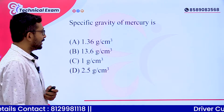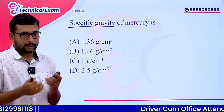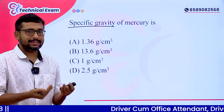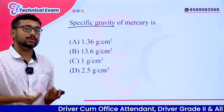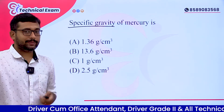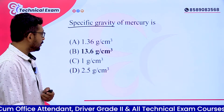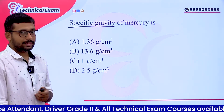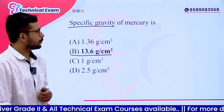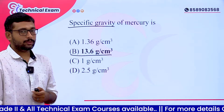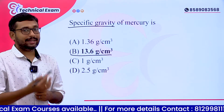Specific gravity of mercury — what is specific gravity? It is simple: the density of a material divided by the density of a standard material, which is water at 1000 kg/m³. The specific gravity of mercury is 13.6 gram per centimeter cube.